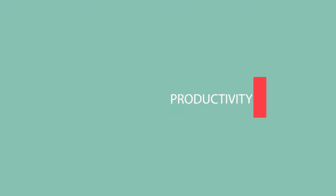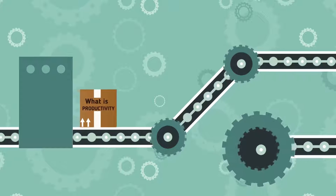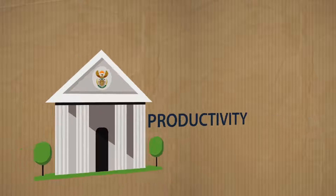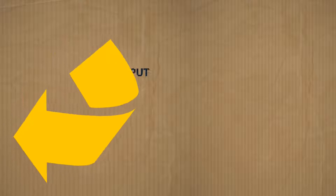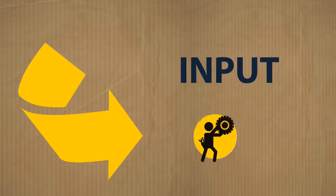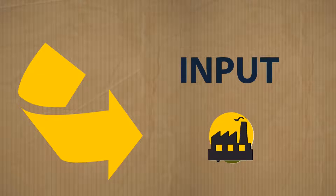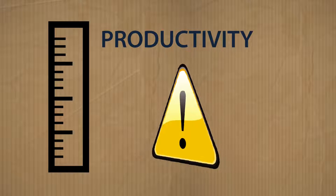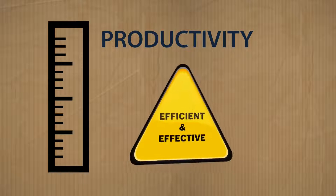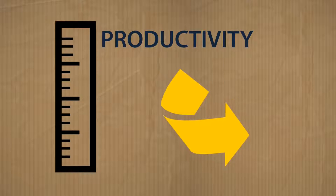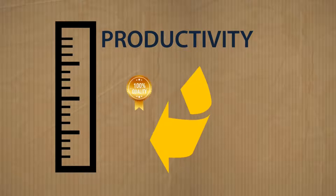What is productivity? From an institutional perspective, productivity refers to the relationship between institutional output — that is, goods and services delivered — and input required, such as labor, finances, and infrastructure. As such, the measurement of productivity will indicate whether the activities of an institution are efficient and effective. Productivity is therefore an important measure of how economically available institutional inputs are being translated into high-quality outputs.